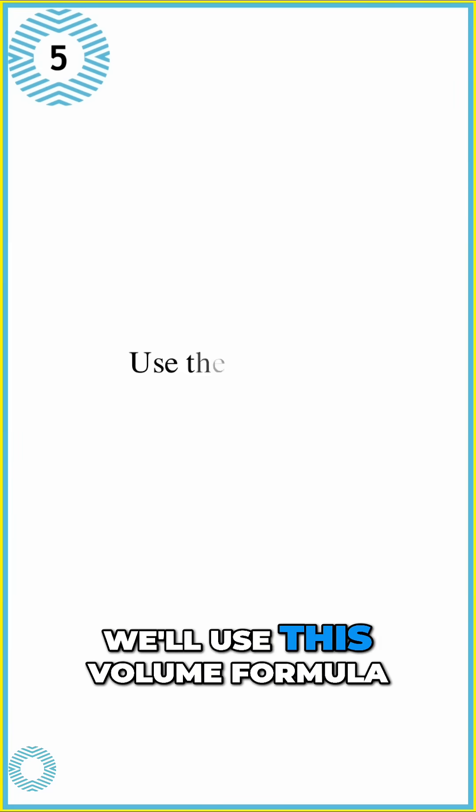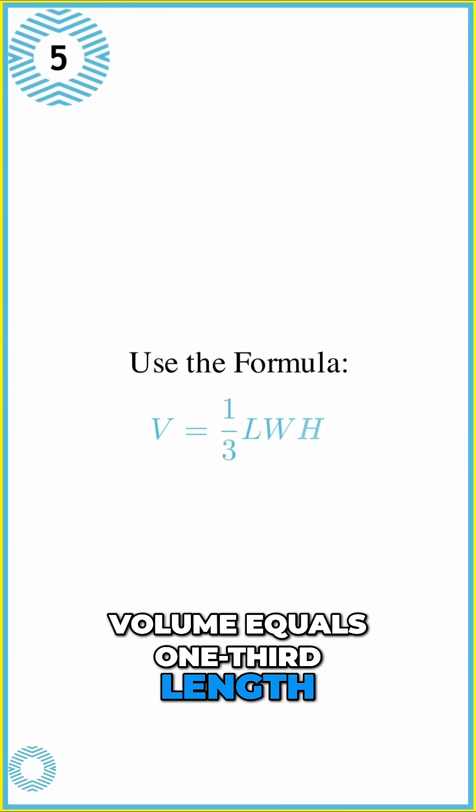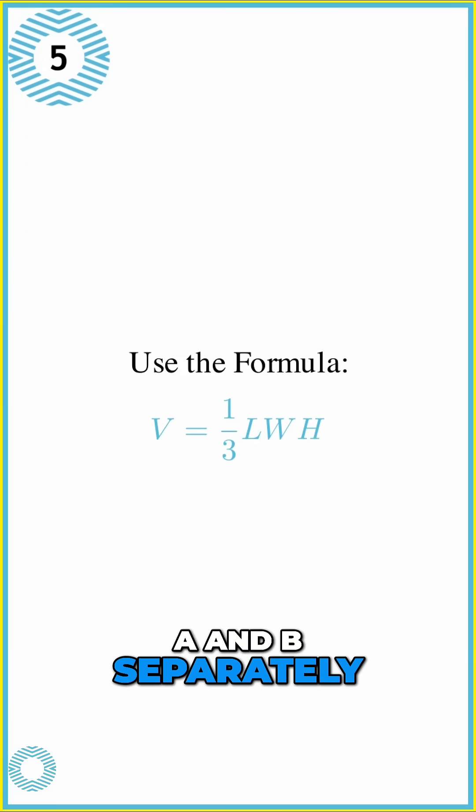Trick spotlight. We'll use this volume formula V equals one-third length width height to find the volumes A and B separately. Remember this formula.